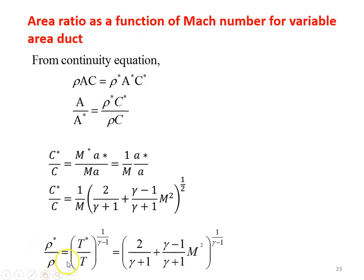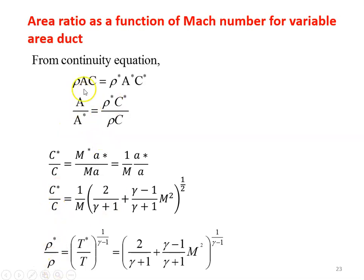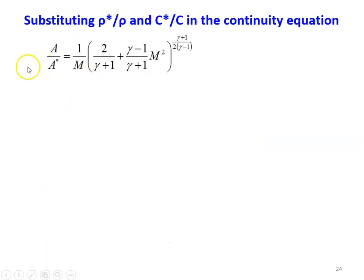Similarly, ρ*/ρ equals (T*/T)^(1/(γ−1)), which we already derived as [2/(γ+1) + (γ−1)/(γ+1) × M²]^(1/(γ−1)). Now substituting the values of C*/C and ρ*/ρ into the previous equation, we get A/A* equal to (1/M) × [2/(γ+1) + (γ−1)/(γ+1) × M²]^((γ+1)/(2(γ−1))).